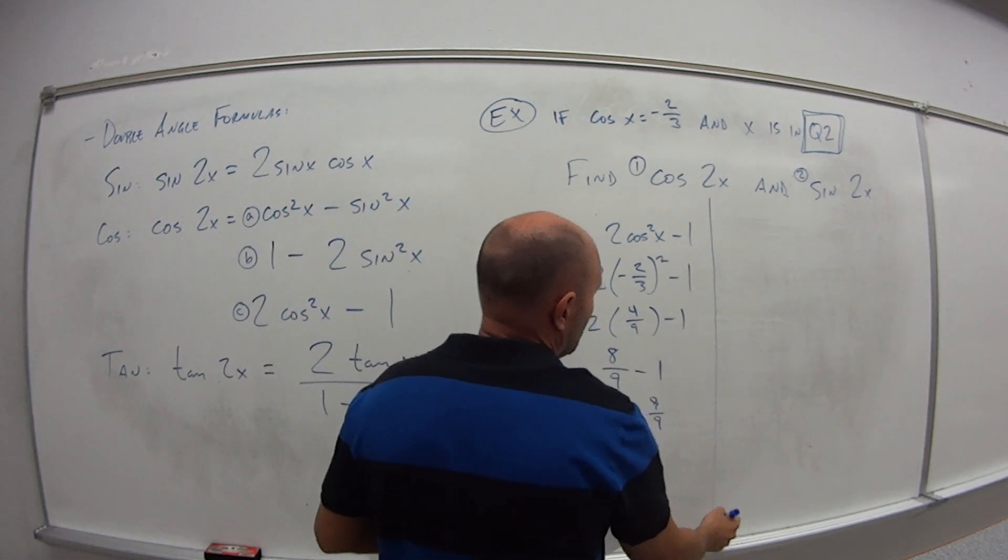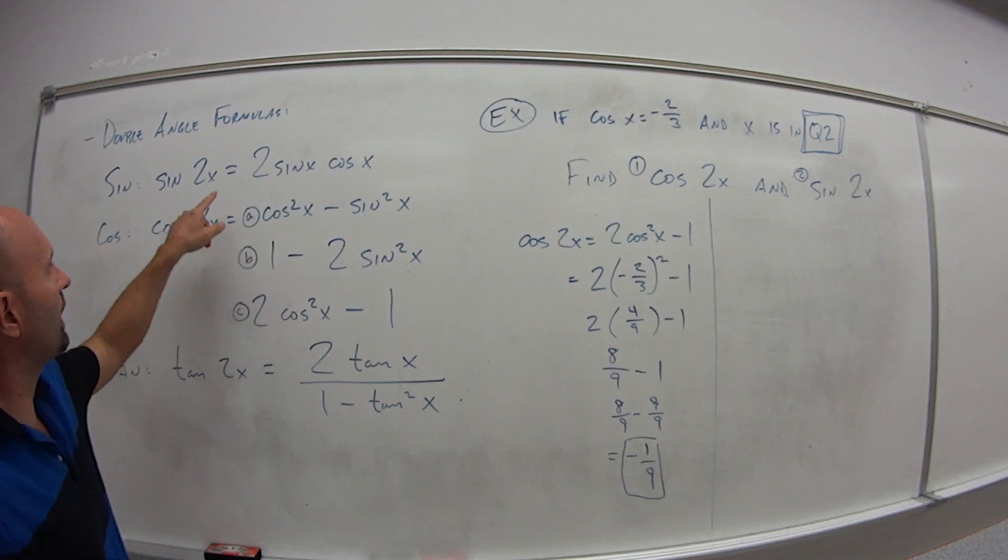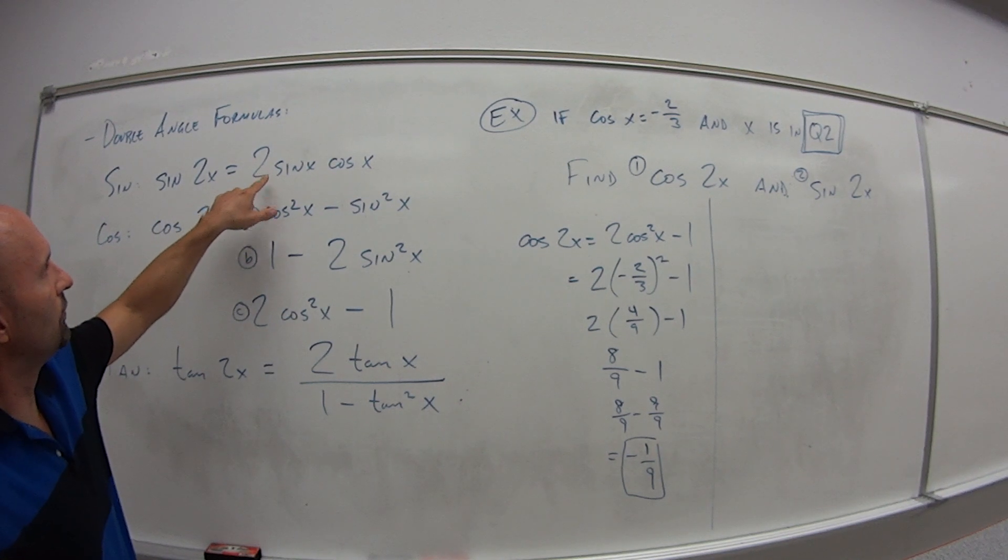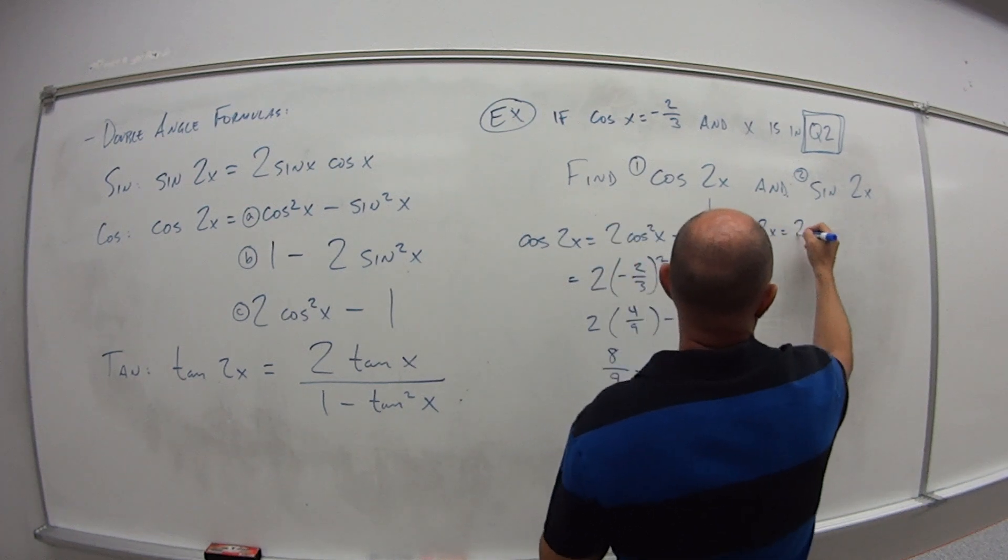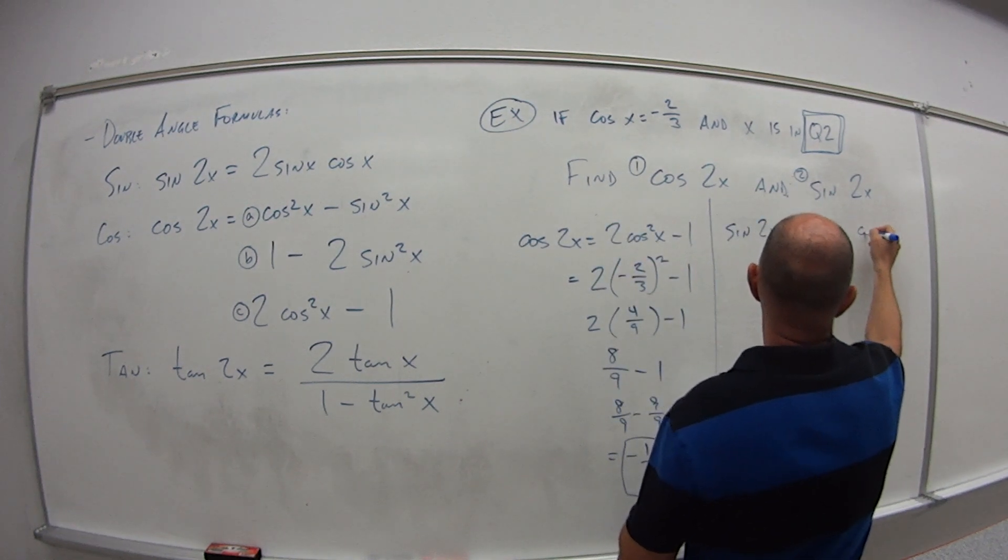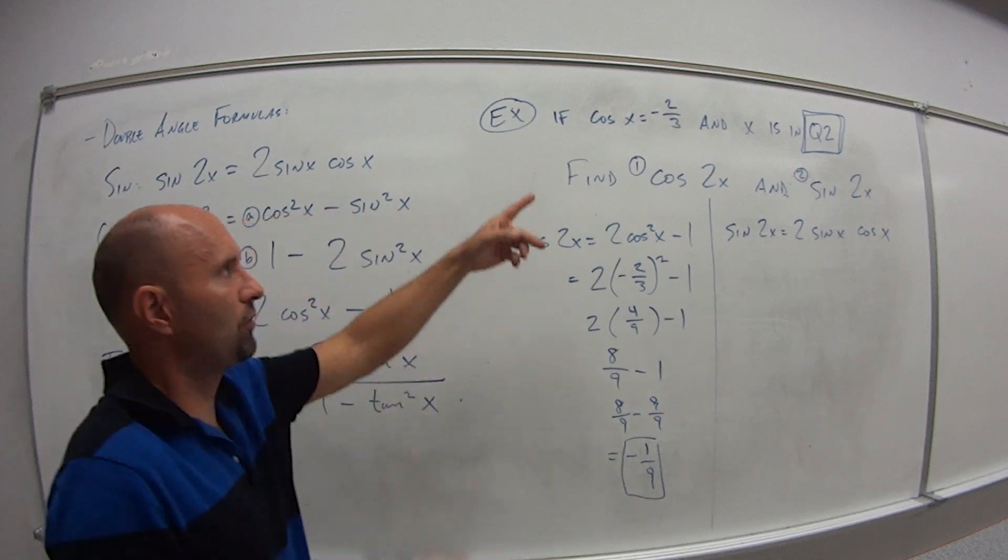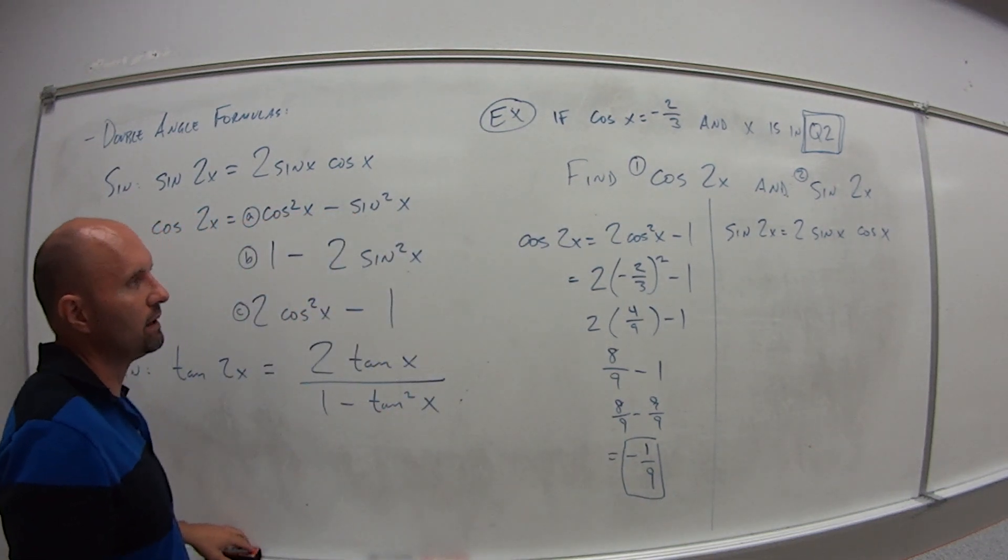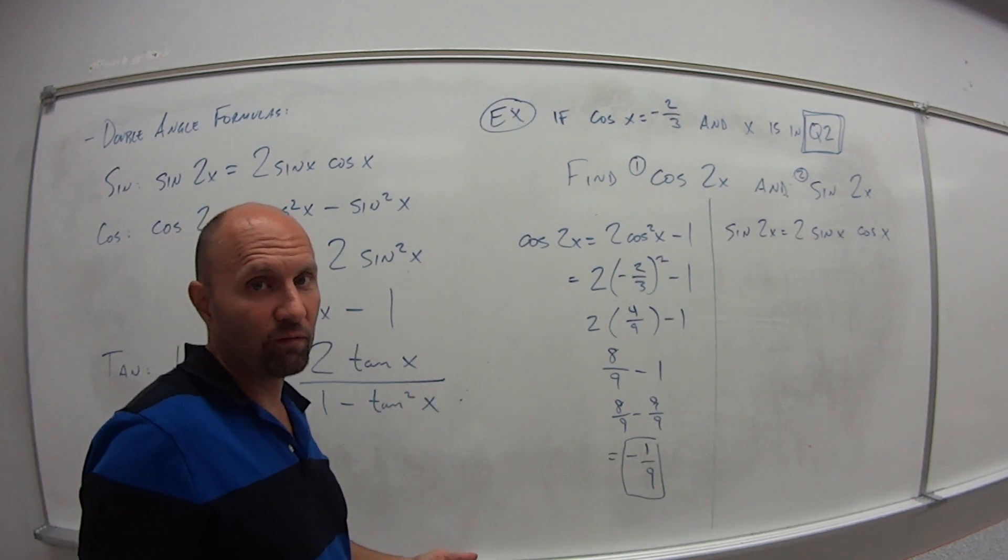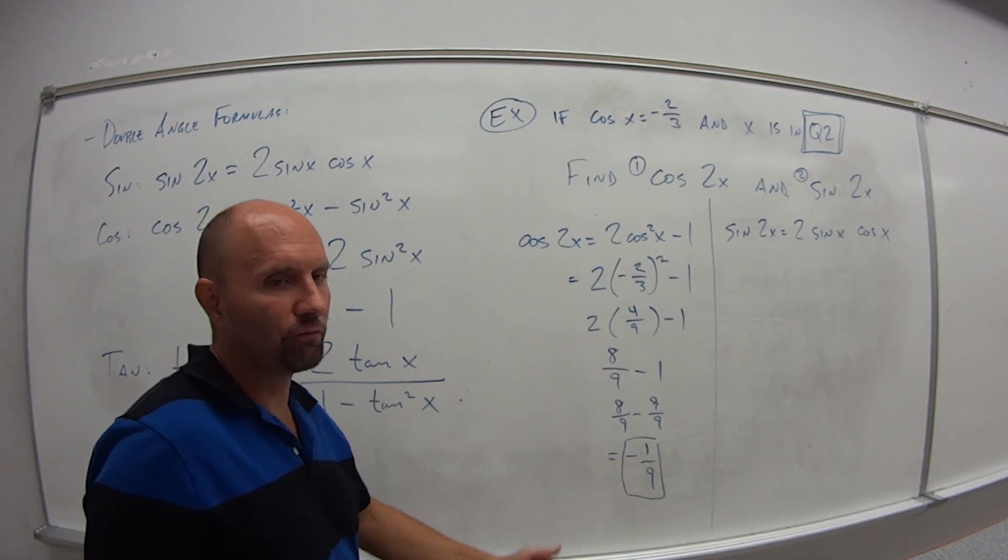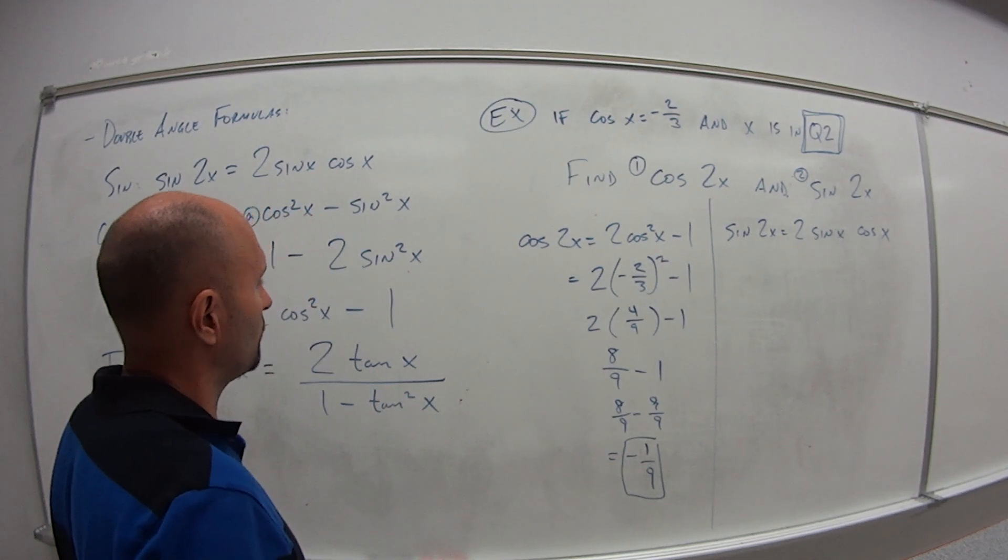Now for problem number 2. We want to find the sine of 2x. Well sine of 2x is 2 times sine of x times cosine of x. I have cosine of x, that was given to me. But what do I need? I need sine of x. How do I figure that out? It's like the first chapters that we did this semester. What are we going to use?